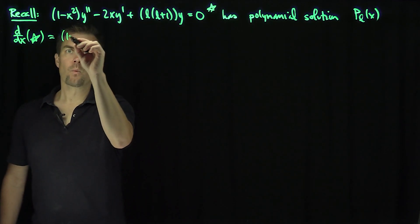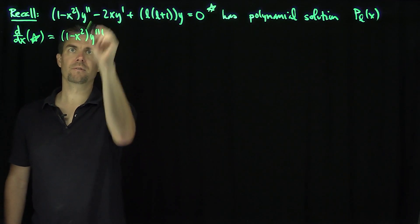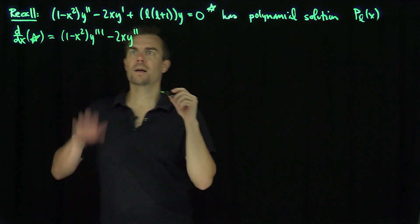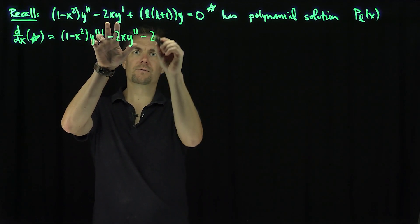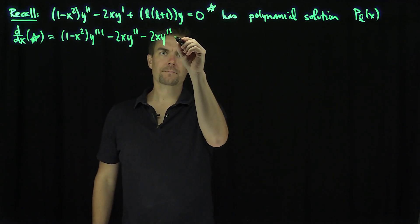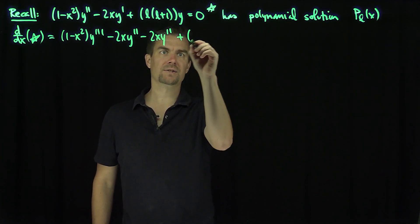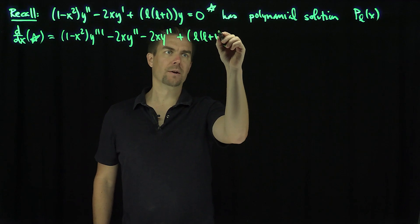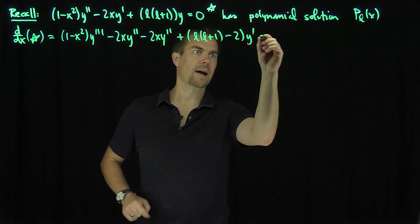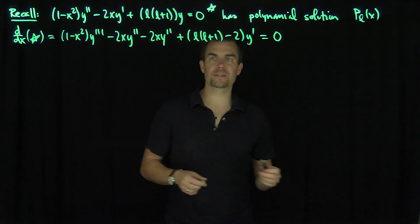Taking d/dx of equation (★) gives us (1 - x²)y''' minus 2xy'', then from the second term a negative 2xy'' and a minus 2y'. Grouping those, we get plus l(l+1) - 2, times y', equals 0. So P_l' satisfies this equation.